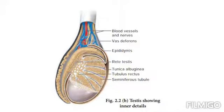Some of the primary spermatocytes undergo the first meiotic division — the reduction division — to form two secondary spermatocytes, which are haploid with 23 chromosomes each. Again, the secondary spermatocytes undergo the second meiotic division to produce four haploid spermatids.